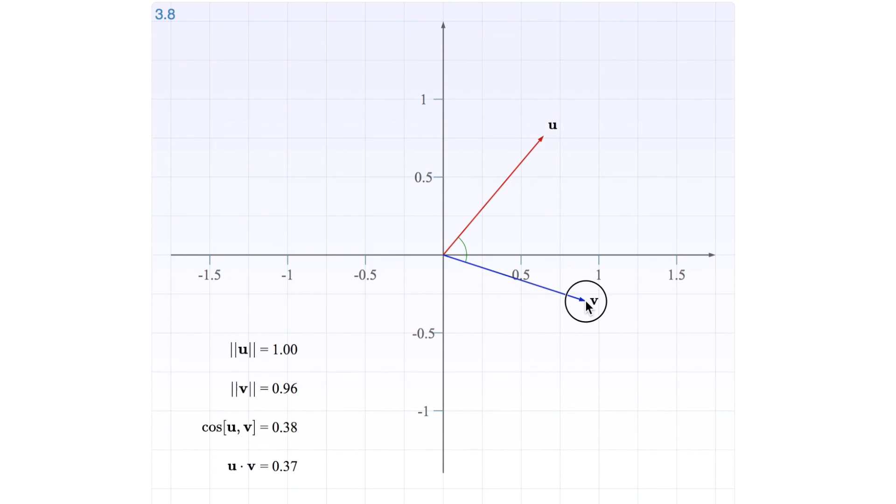So a last thing that we could try is to move v to u here. Then the angle is of course zero, and cosine of zero is one. So that means this is just going to be the lengths multiplied by each other.